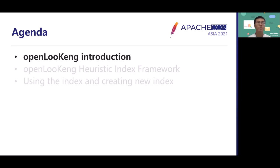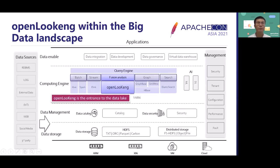First, I will introduce the basic ideas of OpenLogan. If we refer to the big data landscape, we could find that the big data is pretty complex. This figure shows a typical big data system. As we can see, we have several layers that compose the overall big data system. First, we have the physical layer. We can use the ARM server and the x86 server, and we have VMs, we have cloud.